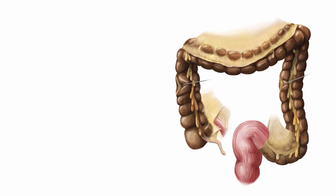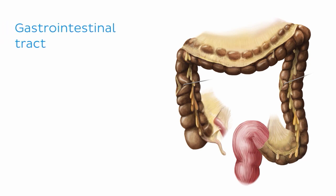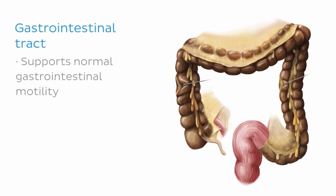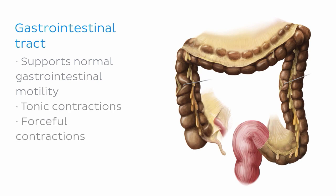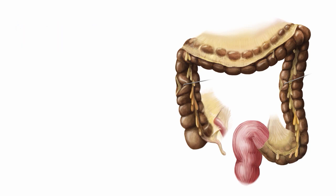Let's get into it by looking at some examples of where we can find smooth muscle tissue in the body. As a general rule of thumb, we can find smooth muscle wherever involuntary contraction needs to take place, and one example of this is the walls of the gastrointestinal tract. Here the smooth muscle layers function to support normal gastrointestinal motility through a combination of tonic contractions and forceful contractions. We'll be going into more detail later on about how smooth muscle functions in hollow organs to move matter through the digestive system.